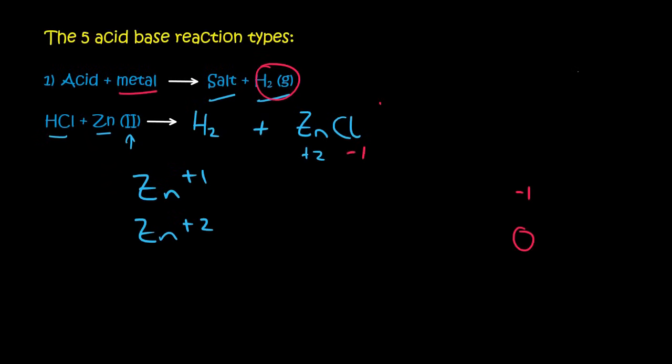And so zinc is plus two and chloride is minus one. And so to balance that out, we would need two chlorides like that. We could then balance everything out. So here on this side, we have two chlorine molecules or two chlorine atoms. Here we have one. So we're going to put a two in the front there and then everything is balanced.